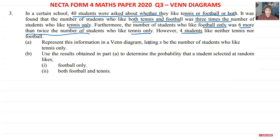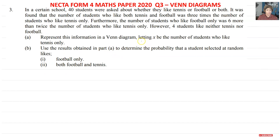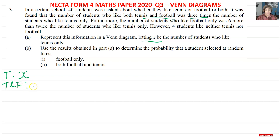We are asked to represent this information in a Venn diagram, letting x be the number of students who like tennis only. So tennis only is x. We were told the number who like both tennis and football was three times the number who like tennis only, so tennis and football is 3x.